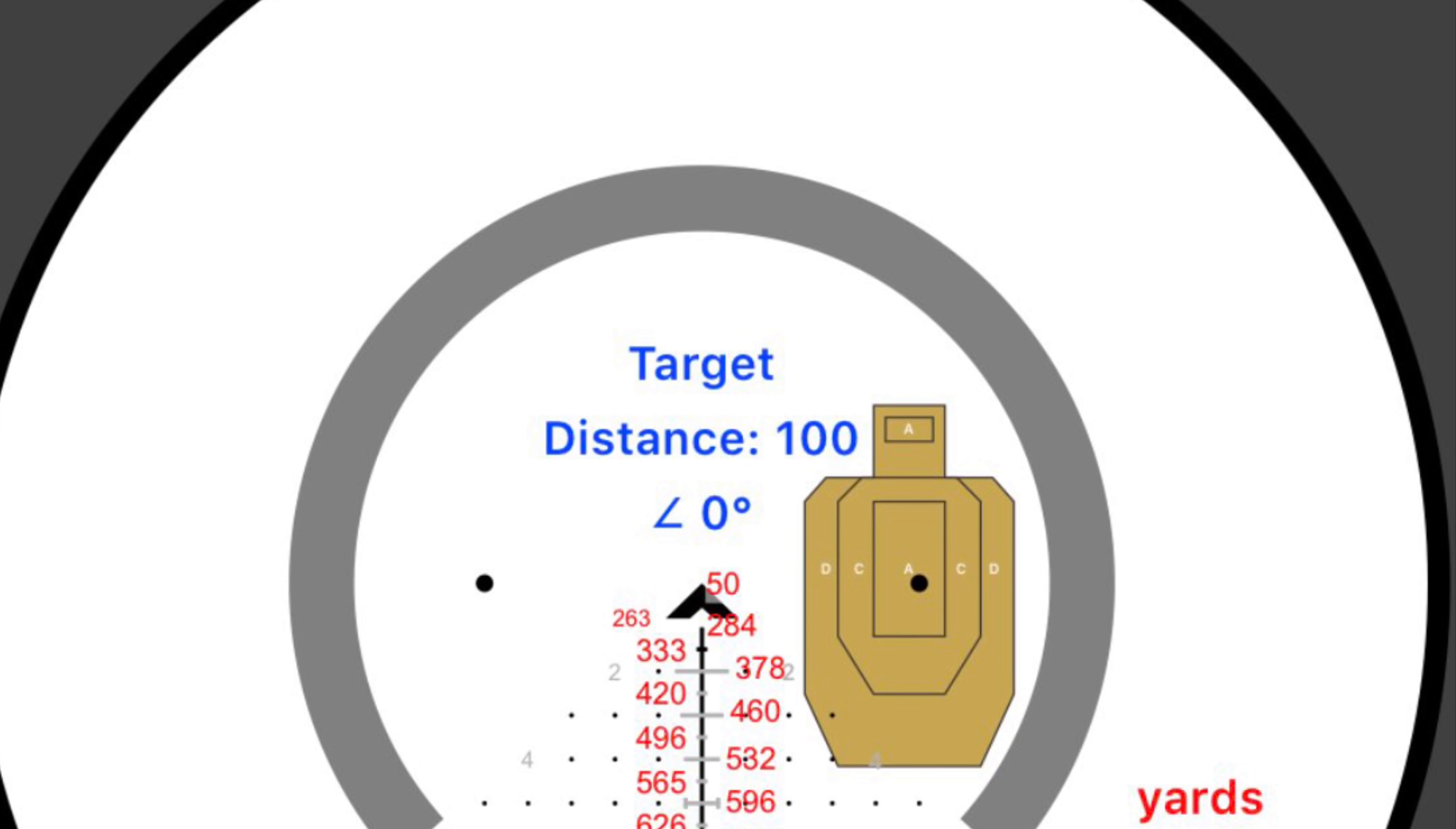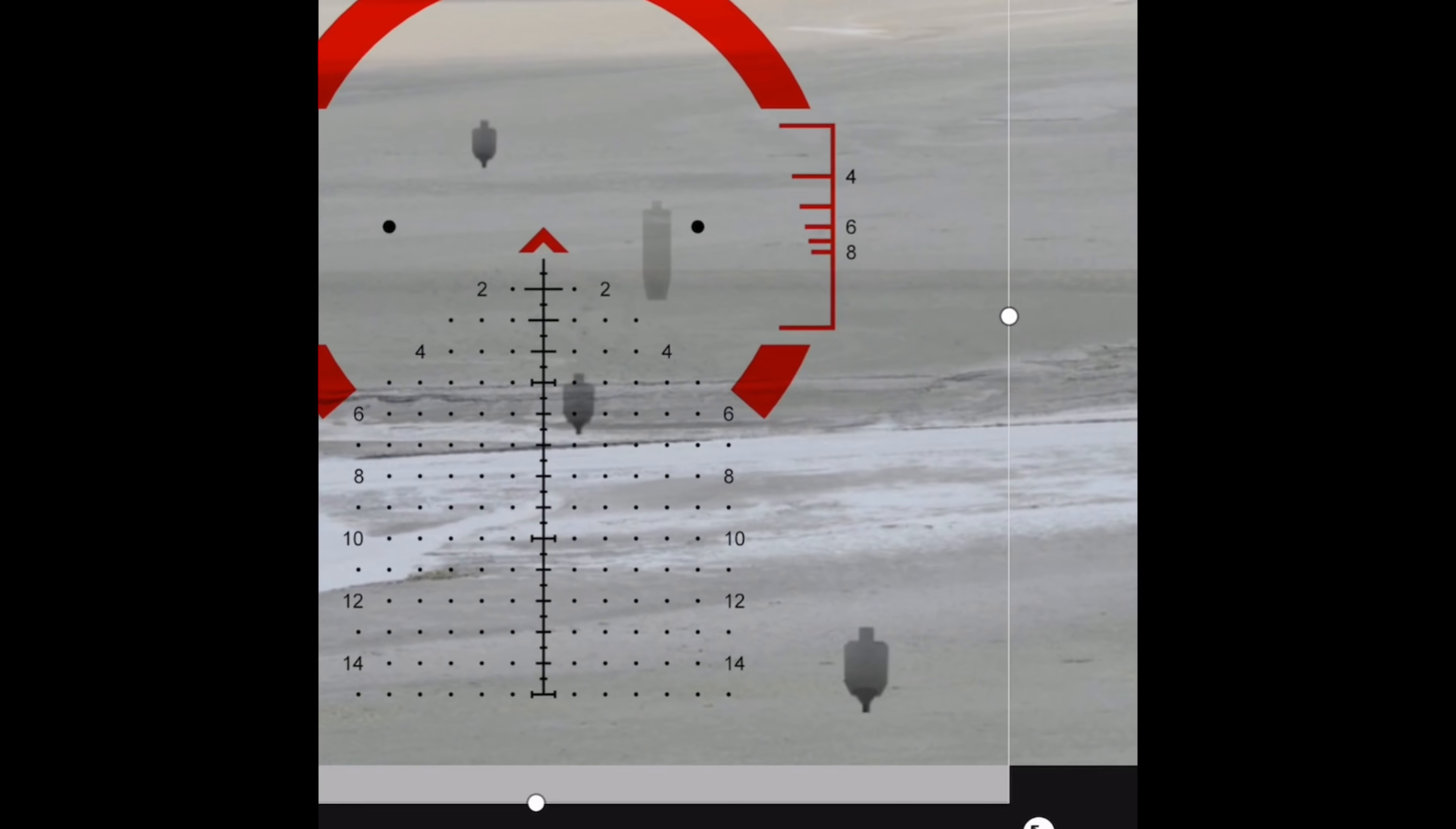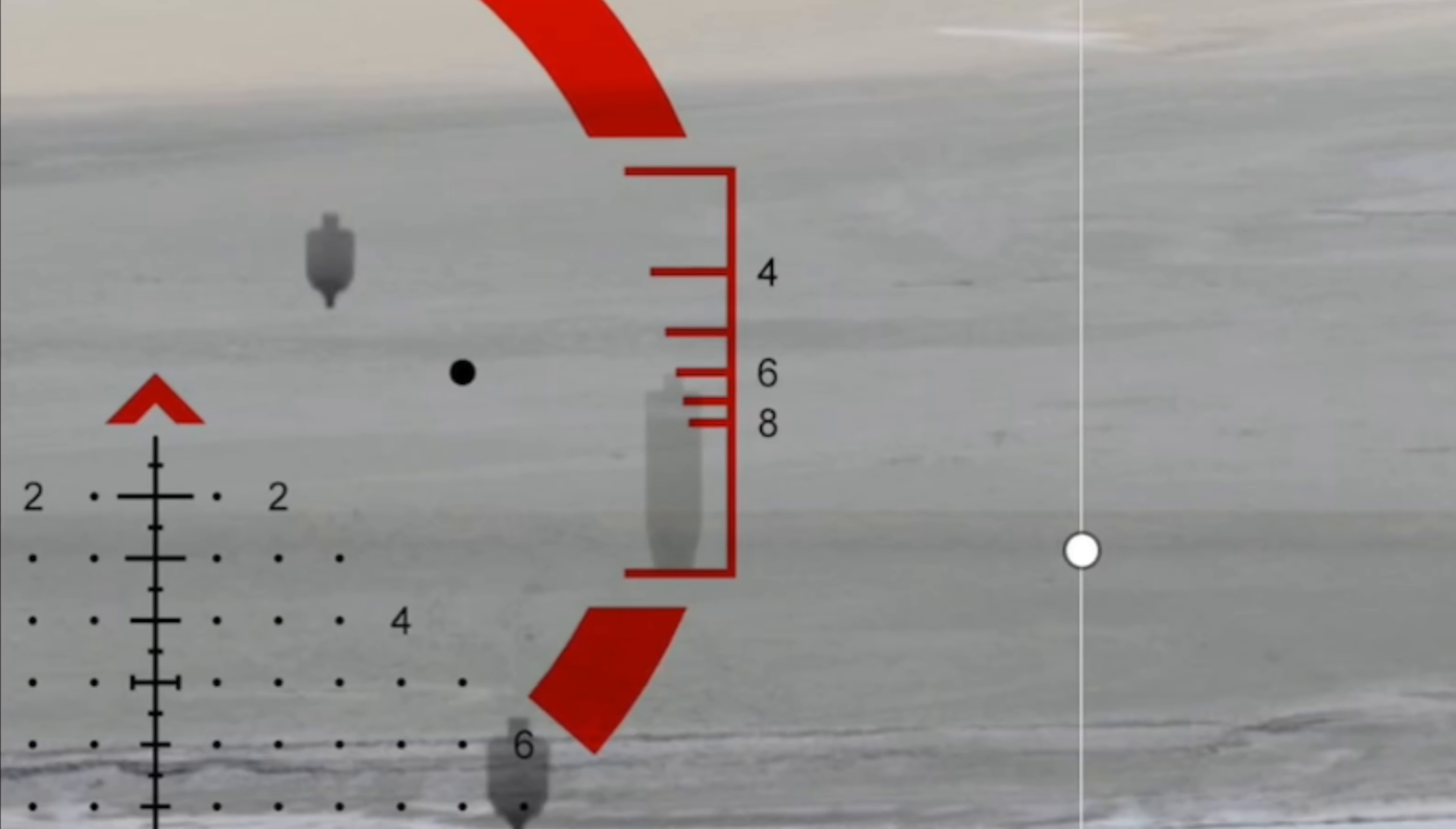You also notice two dots off to the left and right. Those are set for your average lead, so on a moving target you would simply shoot when the target hits the dot. Another awesome built-in feature is the ability to range estimate full height.